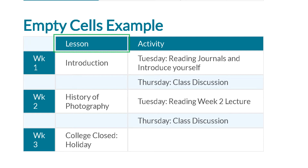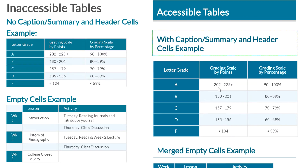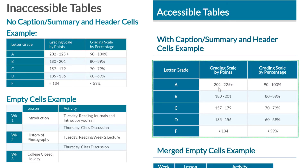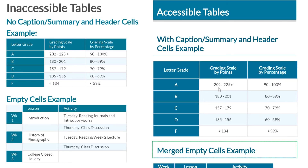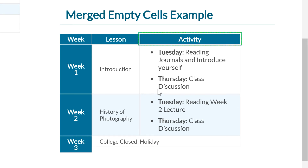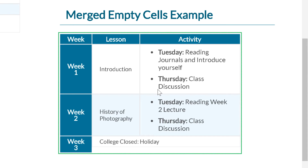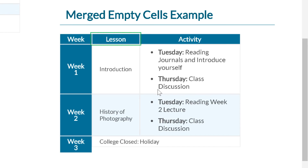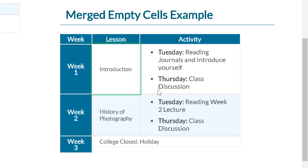So let's go to the good version — merged empty cells. This is the same table I was just showing, but it avoids blank columns by merging those cells, so we don't have to navigate or travel as much. The table has four rows and three columns, captioned 'Class schedule.' Week is the first column, Lesson is the second, and Activity is the third. Going to the next row: Week 1 — Lesson: Introduction — Activity: Tuesday, reading journals and introduce yourself. It reads the column header and then the cell information.